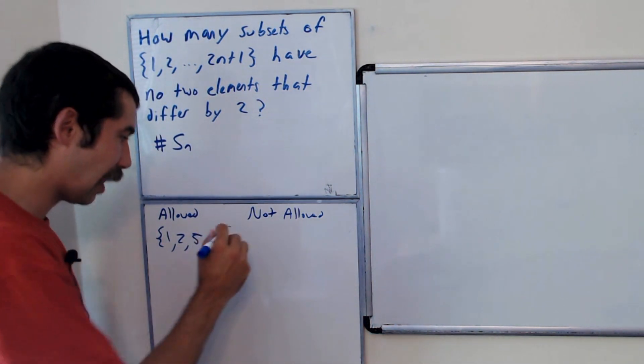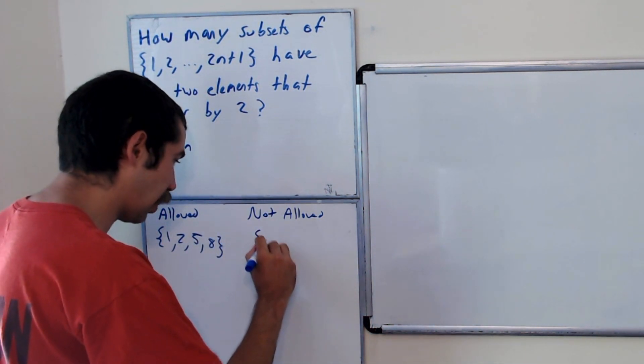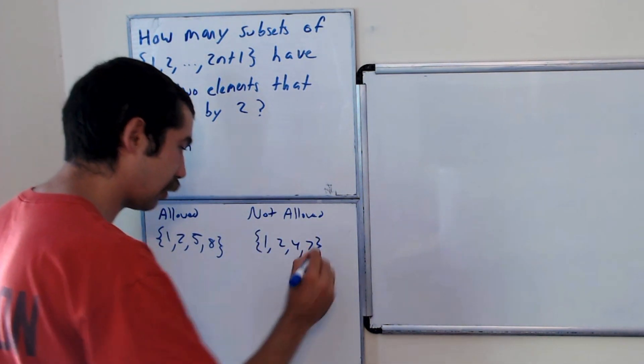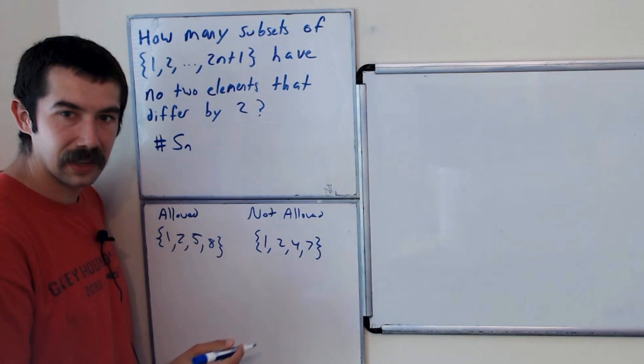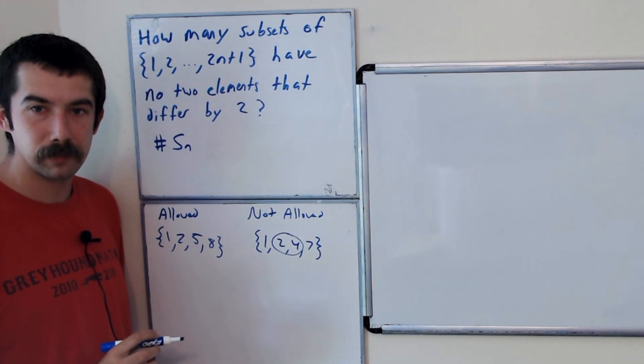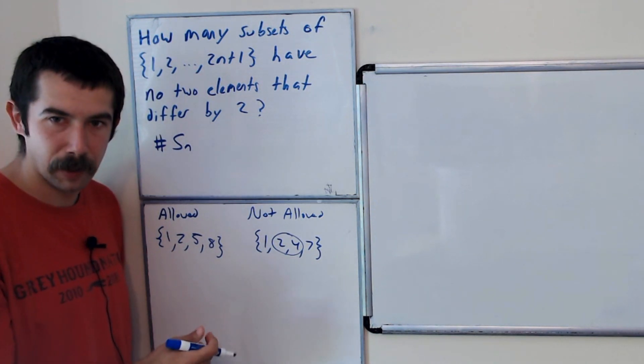What's not allowed would be, let's do a couple of examples that aren't allowed. 1, 2, 4, 7. That's not allowed because 2 and 4 are exactly 2 apart.